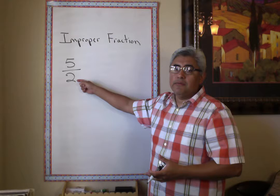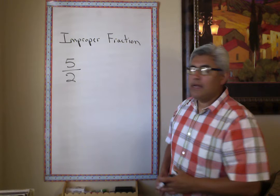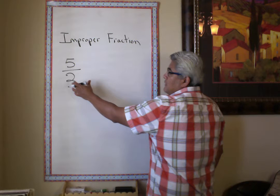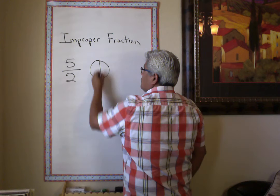You cannot have five pieces if you cut a whole into two. That's why it's called an improper fraction — you can't get five pieces from a whole that's cut into two. So I'm going to draw a picture of what an improper fraction looks like. Our denominator says that each whole is cut into two pieces.